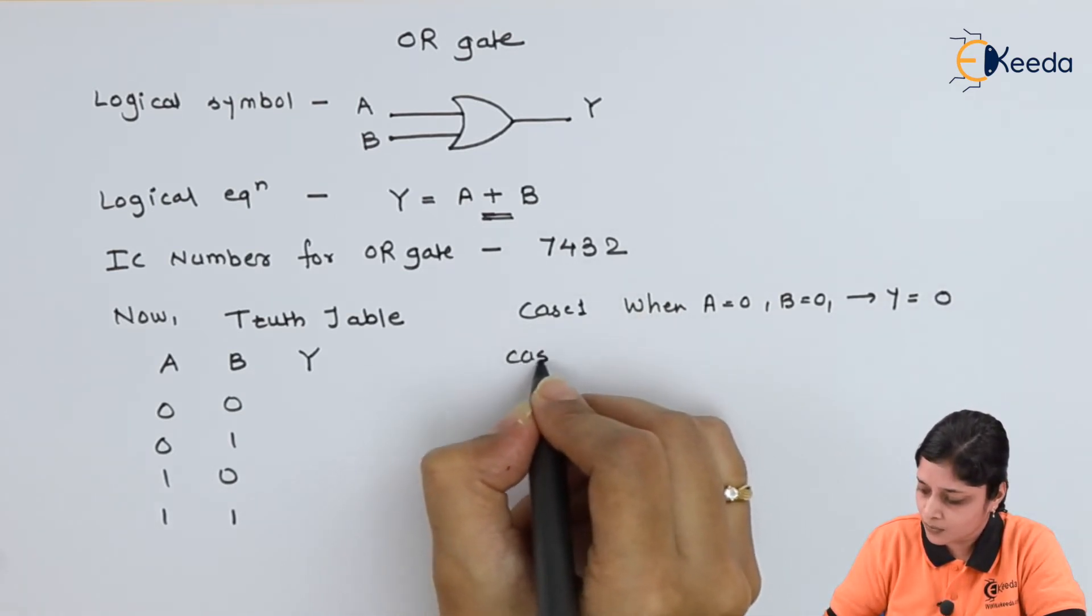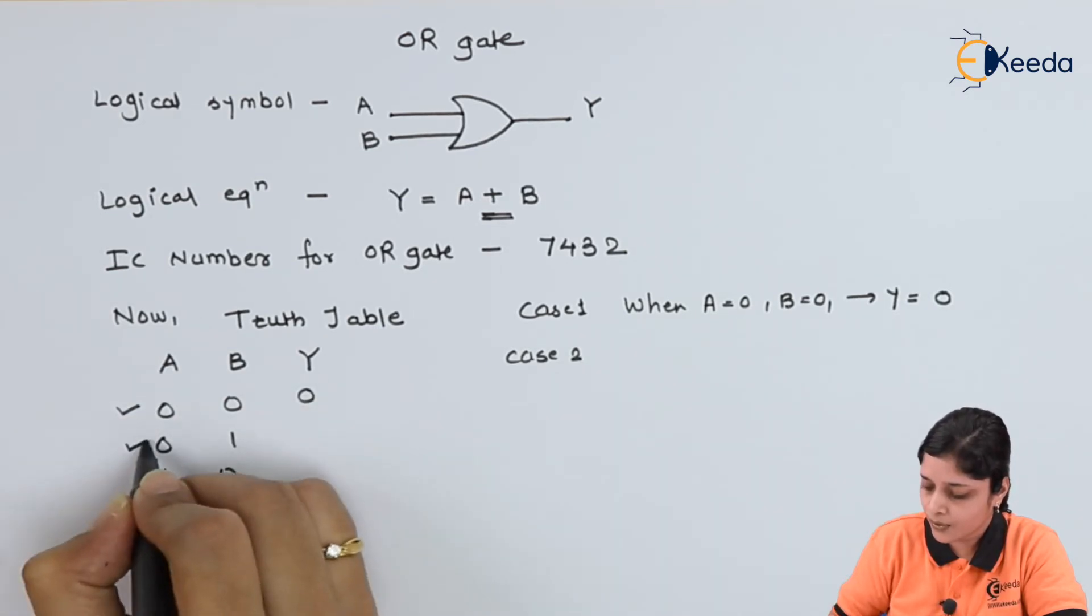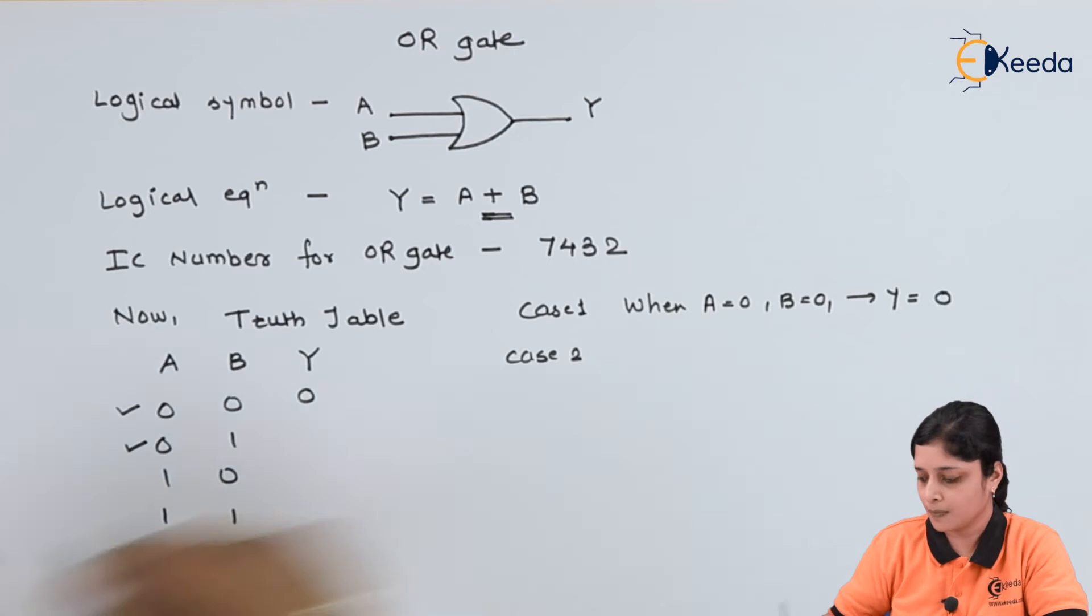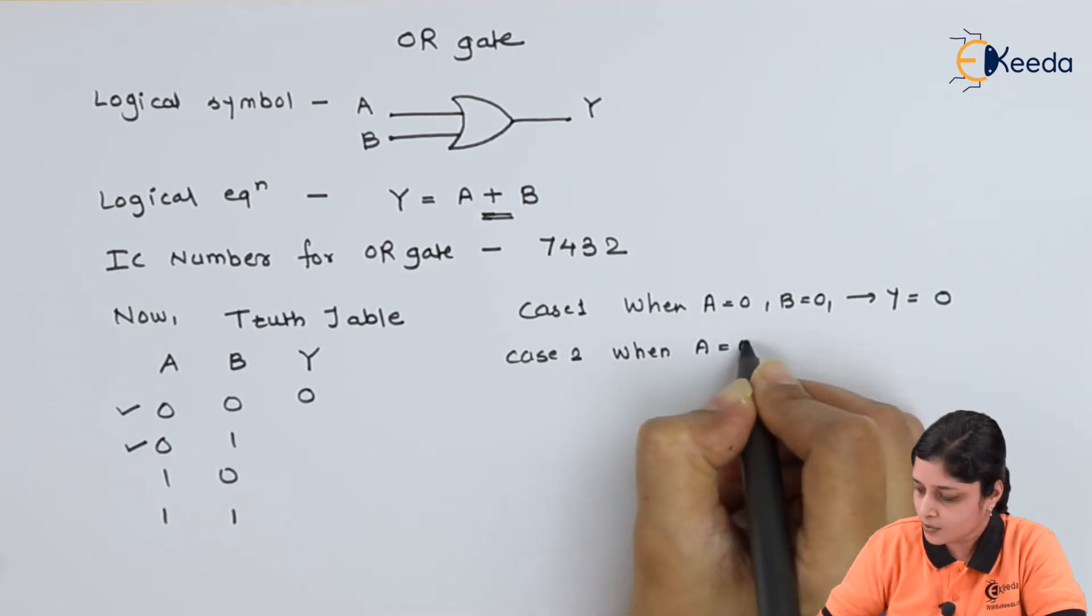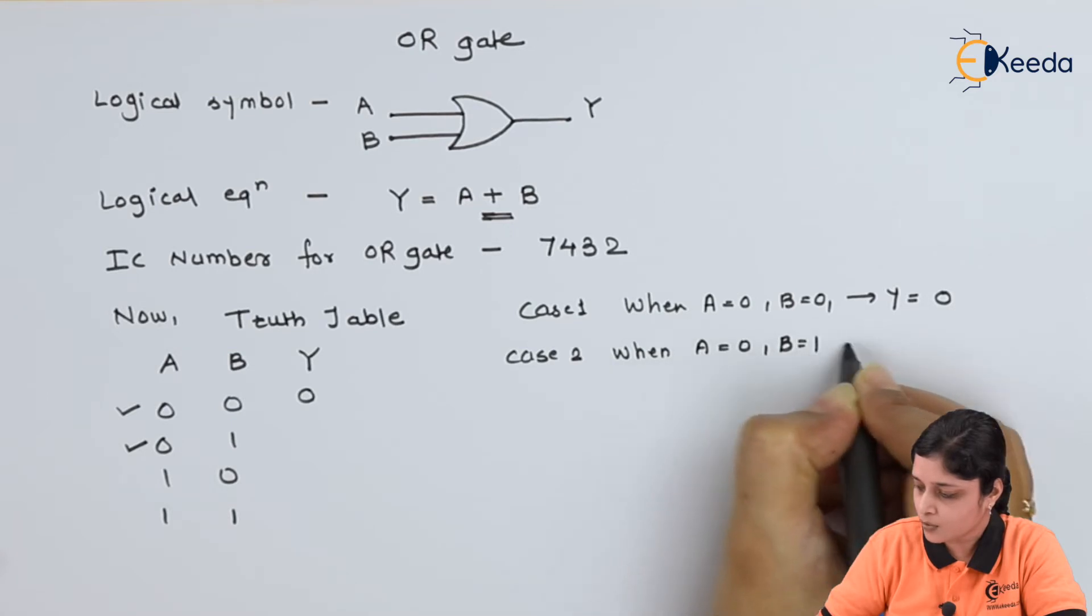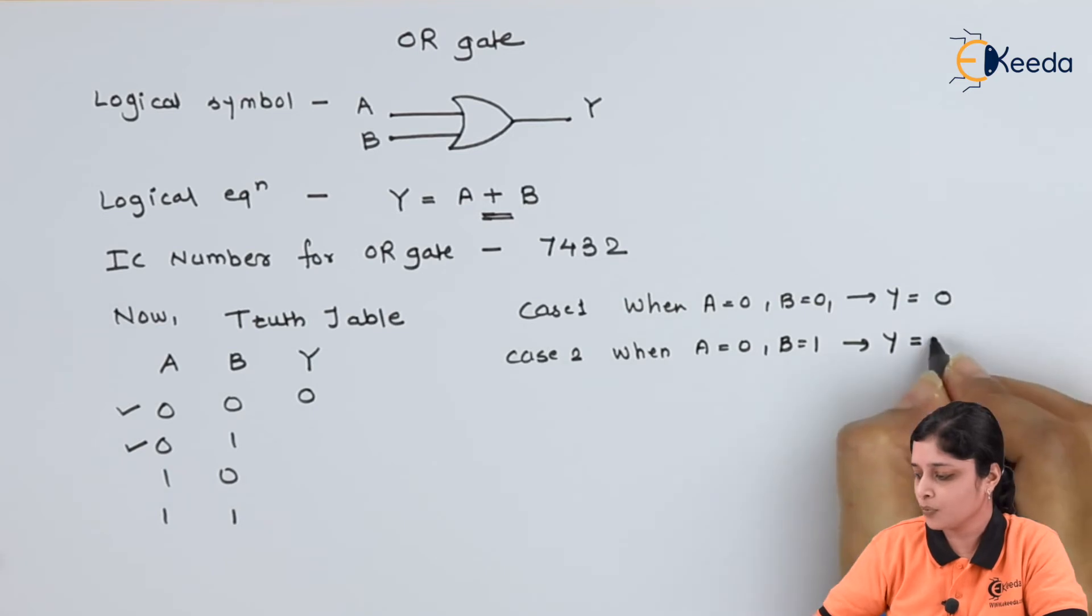Case 2: when A equals to 0, B equals to 1, we'll get Y equals to 1. That is, the output equals to 1.